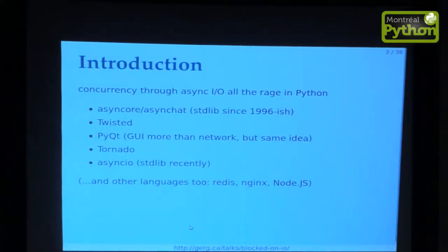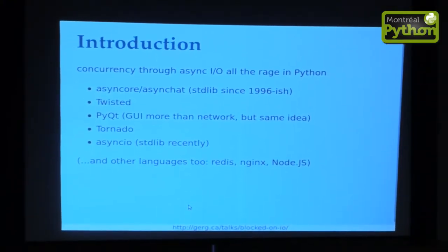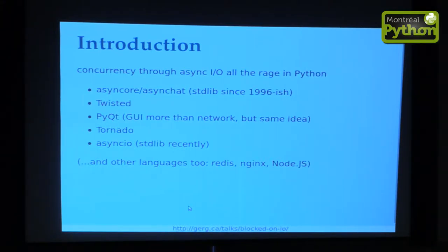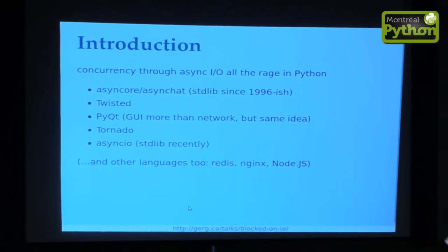The next attempt came along in the early 2000s: a framework called Twisted, which is a much more ambitious and probably much closer to successful attempt to solve all the world's concurrency problems for Python using asynchronous I/O. I included PyQt in this list, not because it's a network framework, but because this is a programming technique useful for more than just networking — also extremely useful for GUI programming. Tornado came along maybe 10 years ago, and more recently we have asyncio in the standard library. Redis and Nginx are two popular monolithic servers written in C using asynchronous I/O. In Node.js, my understanding is it's asynchronous I/O or nothing — that is how you do concurrency in Node.js.